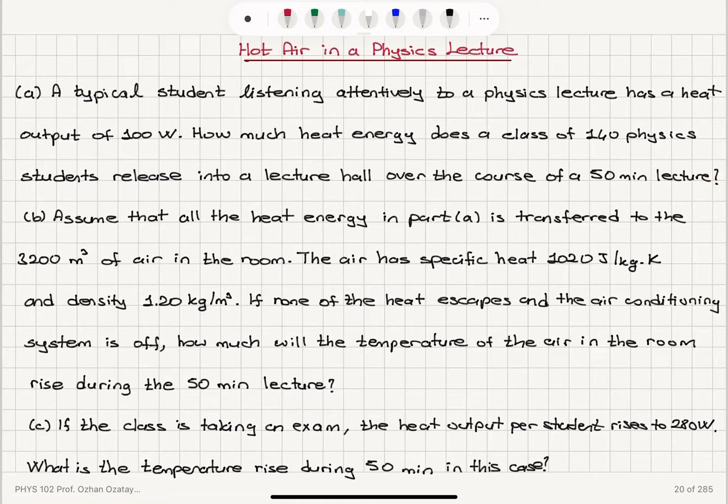Part B. Assume that all the heat energy in Part A is transferred to the 3200 meter cube of air in the room. The air has specific heat 1020 joules per kilogram Kelvin and density 1.2 kilograms per meter cube.